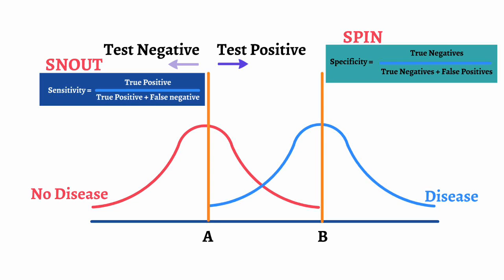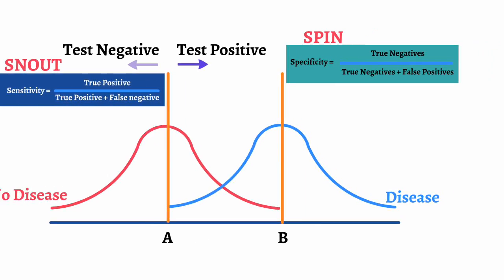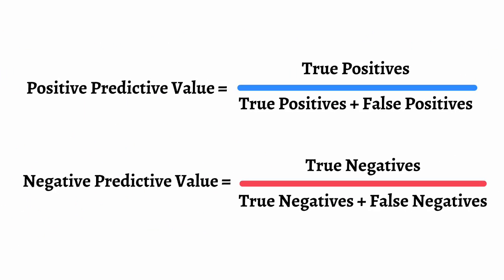The next two terms are positive predictive value and negative predictive value. Positive predictive value tells us the likelihood that if someone tests positive, they will actually have disease X. Negative predictive value tells us if someone tests negative, the likelihood they will actually be free of disease X. You calculate positive predictive value by true positives divided by the sum of true positives plus false positives. Negative predictive value is calculated by true negatives divided by the sum of true negatives plus false negatives. Do not get these formulas mixed up with sensitivity or specificity.